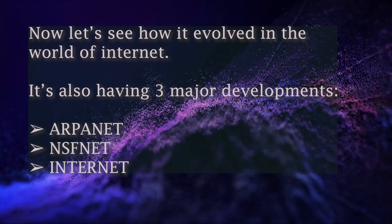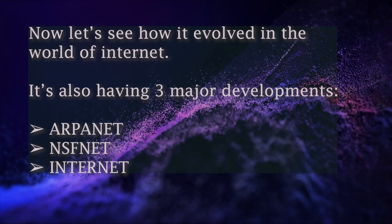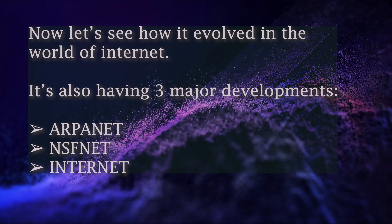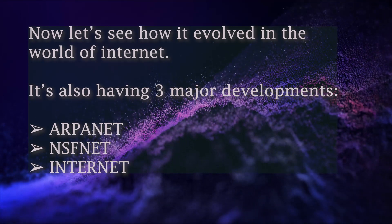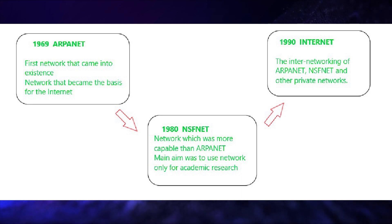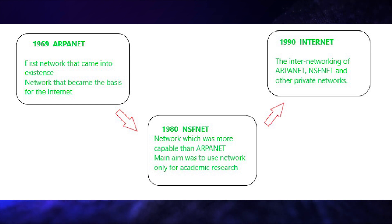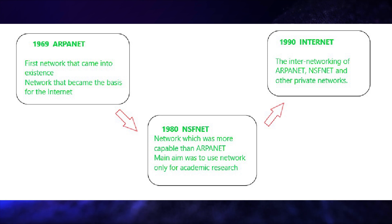The world of internet has three major developments: ARPANET, NSFNET, and the Internet. ARPANET came into the market in 1969 as the first network, laying the basics for the internet. Then NSFNET came in 1980 as a more capable network, used primarily for academic resources.